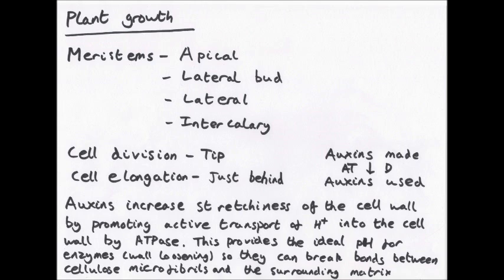Lateral meristems are found in the cylinder near the outside of the roots and shoots and are responsible for roots and shoots getting wider. Not all plants, but some plants have intercalary meristems, which are located between the nodes. Bamboo is a good example — you have those little bulges at various points, those are nodes. The intercalary meristem is located between the nodes, and growth between the nodes is responsible for the shoot getting longer.